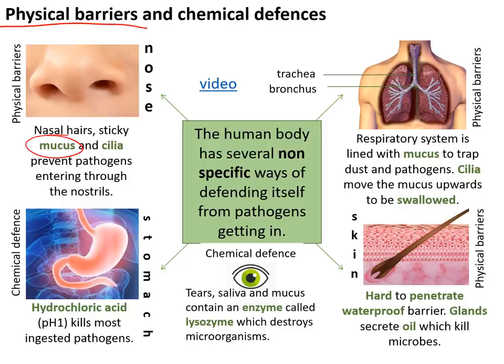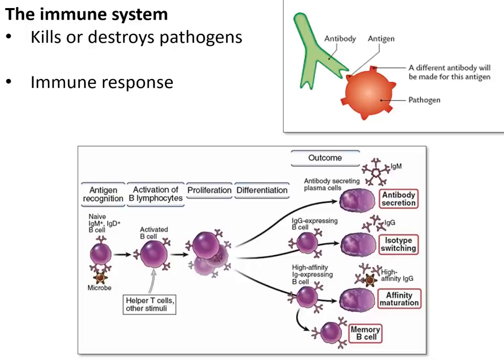Physical barriers block pathogens from entering us, including the mucus inside our nose and lungs that traps bacteria, and cilia that sweep that mucus back up and out of the body. We also have chemical defences that kill pathogens — for example, lysozyme, an enzyme found in saliva, tears, mucus, and sweat, which kills bacteria. Hydrochloric acid in our stomach kills most of the pathogens on our food.